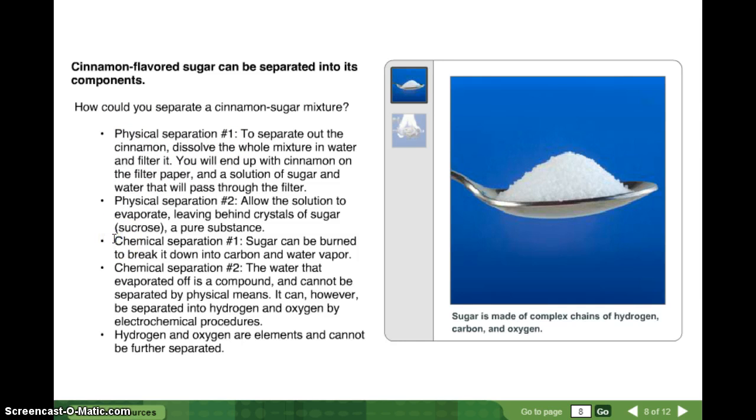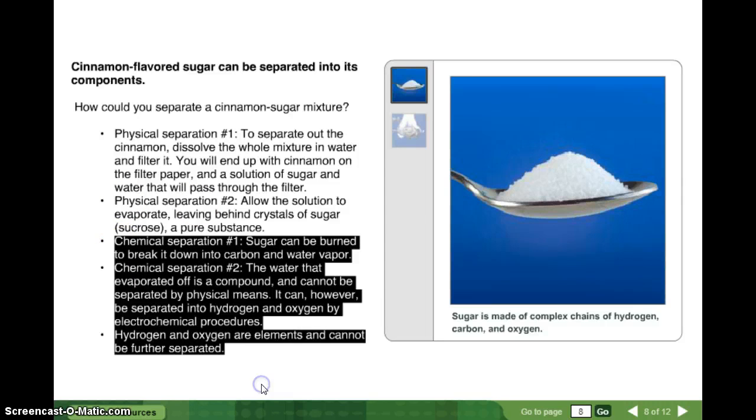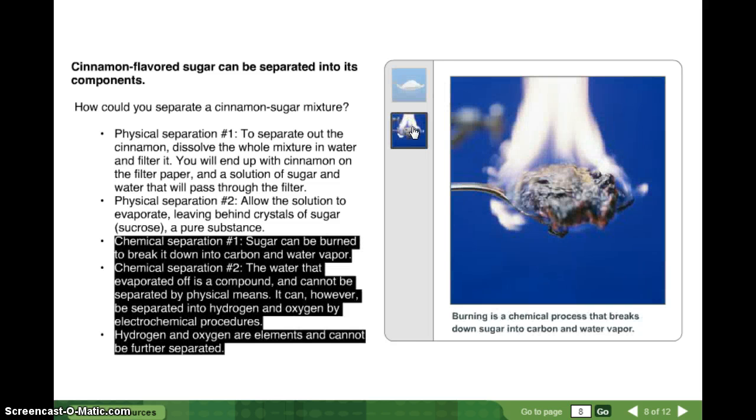Now we're going to chemically separate. We're going to take that sugar and burn it to break it down into carbon and water vapor. Chemical separation two. The water that evaporated off is a compound and cannot be separated by physical means. It can, however, be separated into hydrogen and oxygen by electrochemical procedures. Hydrogen and oxygen are elements and cannot be separated further. So, once we put the mixture into its compounds, into its pure substances, then we said, okay, we can break it down even farther. Sugar is made of complex changes, hydrogen, carbon, and oxygen. Burning is a chemical process that breaks down sugar into carbon and water vapor.